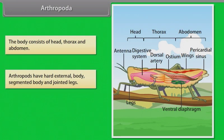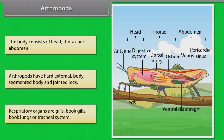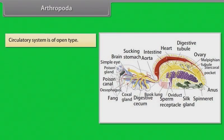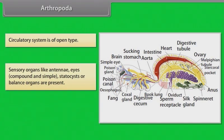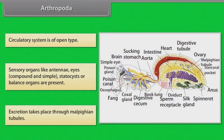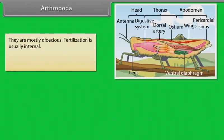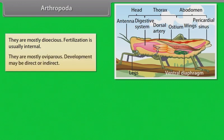Arthropods have a hard external body, segmented body and jointed legs. Respiratory organs are gills, book gills, book lungs or a tracheal system. The circulatory system is of open type. Sensory organs like antennae, eyes (compound and simple) and statocysts or balance organs are present. Excretion takes place through Malpighian tubules. They are mostly dioecious; fertilization is usually internal. They are mostly oviparous, and development may be direct or indirect.